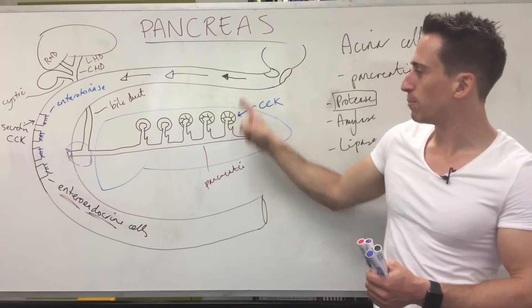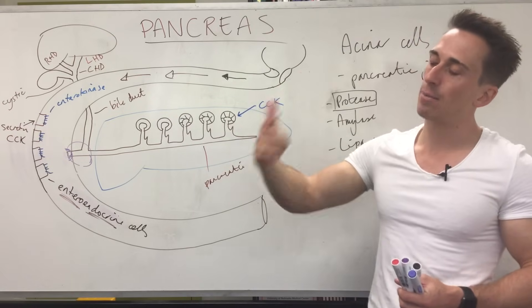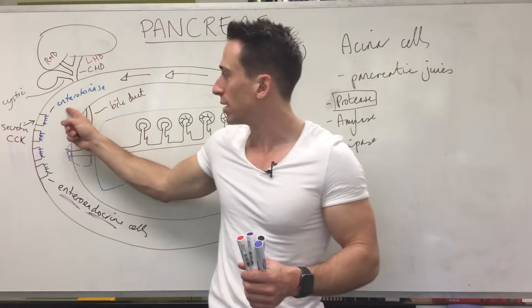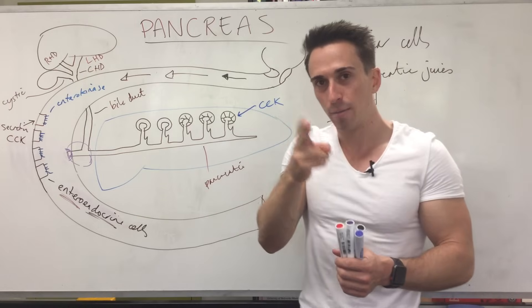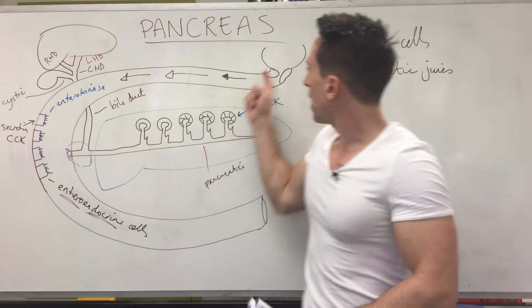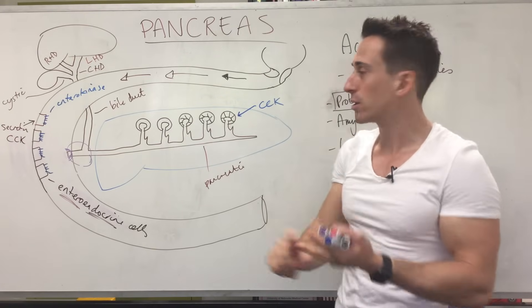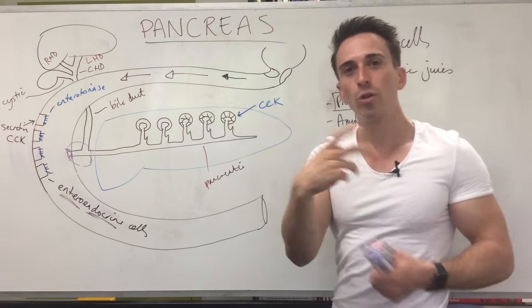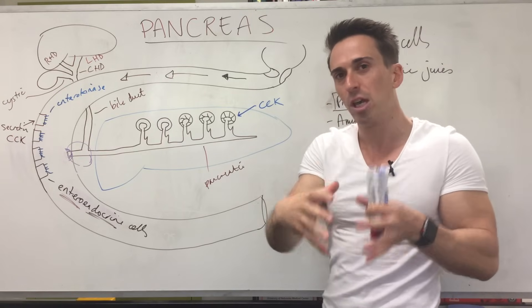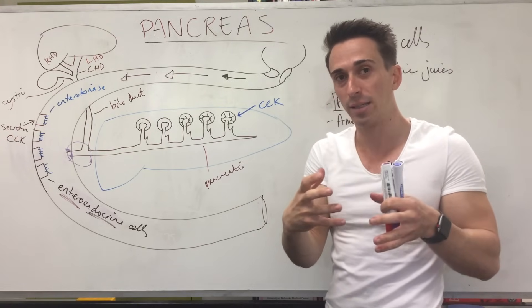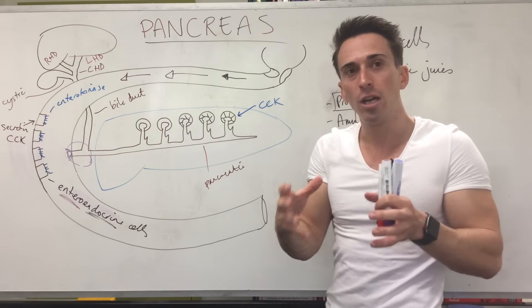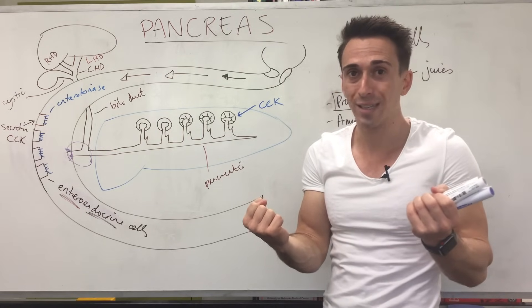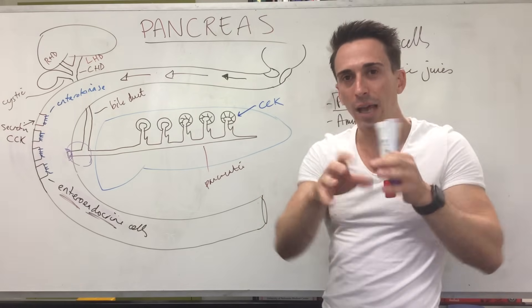To summarize so far: food comes in, stimulates CCK, which is released into the bloodstream and activates acinar cells to release inactive proteases, amylases, and lipases. These travel down the pancreatic duct into the duodenum where enterokinases activate them. Proteins and carbs are already partially digested, but fats arrive as large globules — similar to oils when cooking — and are too large for lipase to work on directly.